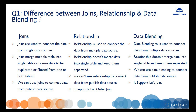Our first question is: what is the difference between joins, relationships, and data blending? All three are used to connect data. Joins are used to connect data from a single data source, while relationships and data blending are used to connect data from multiple data sources. Joins merge multiple tables into a single table and can cause data to be duplicated or filtered. Relationships and data blending don't merge data into a single table — they keep them separated.